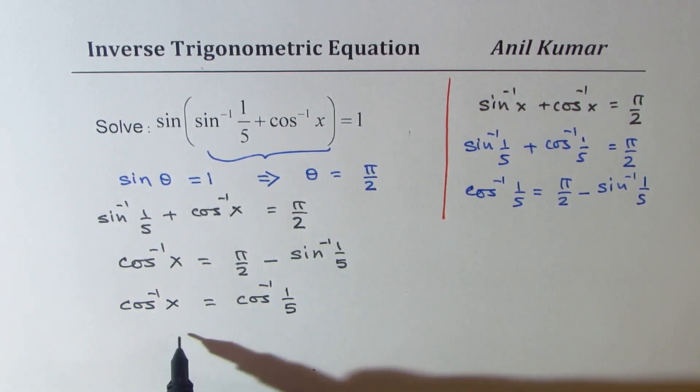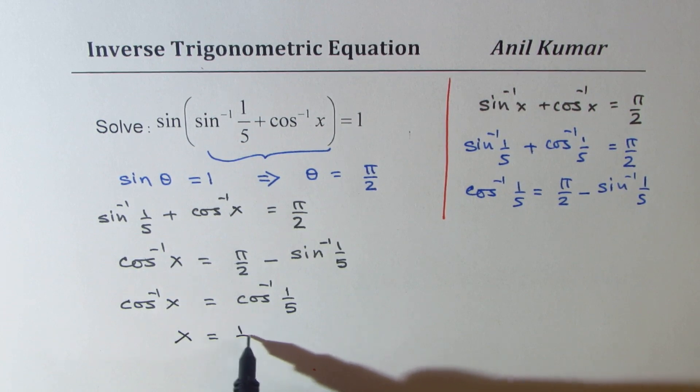And now, comparing them, we get x equals to 1 over 5 as our answer.